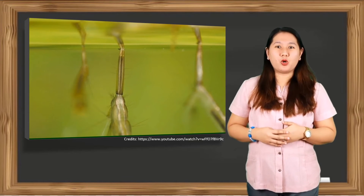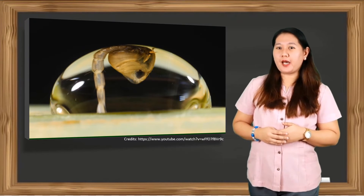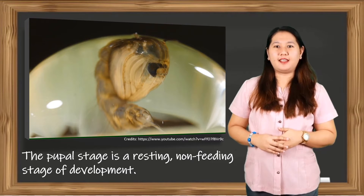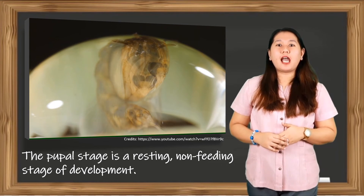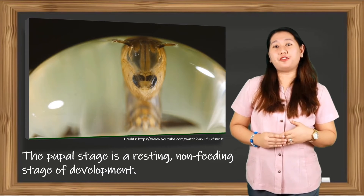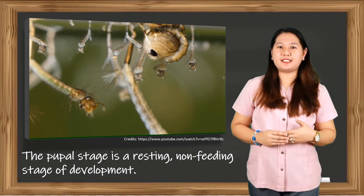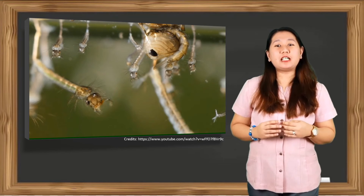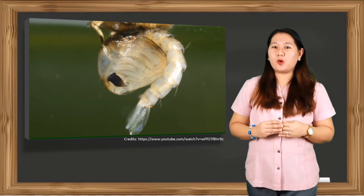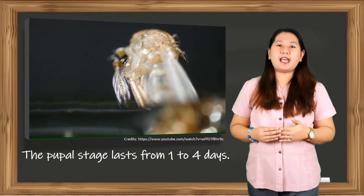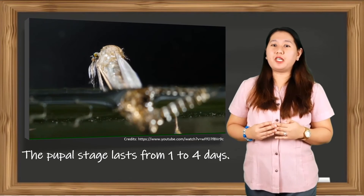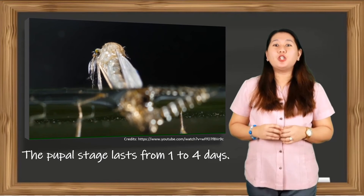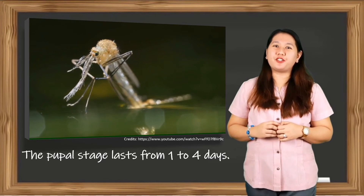During the last molt, the larva changes into a pupa. The pupal stage is a resting, non-feeding stage of development. However, the pupa must still breathe air at the water surface and is sensitive to light, shadows, and other disturbances. They are physically active and employ a rolling or tumbling action to escape to deeper water. The pupal stage lasts from 1 to 4 days, after which the pupa's skin splits along the back, allowing the newly formed adult to slowly emerge and rest on the surface of the water.